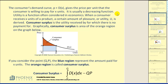Utility is a function often considered in economics. When a consumer receives x units of a product, a certain amount of pleasure, or utility u, is derived. Consumer surplus is the utility received for which there is no payment. Graphically, consumer surplus is the area of the orange region on the graph. We have a demand curve as a decreasing function, p is the equilibrium price the market is charging, and the consumer surplus is the orange region.